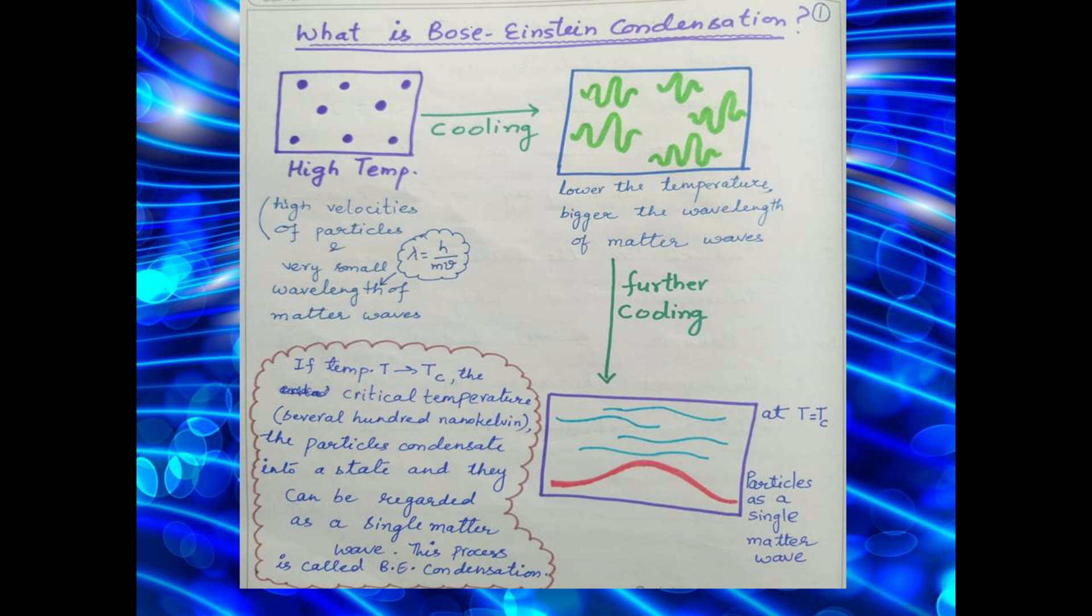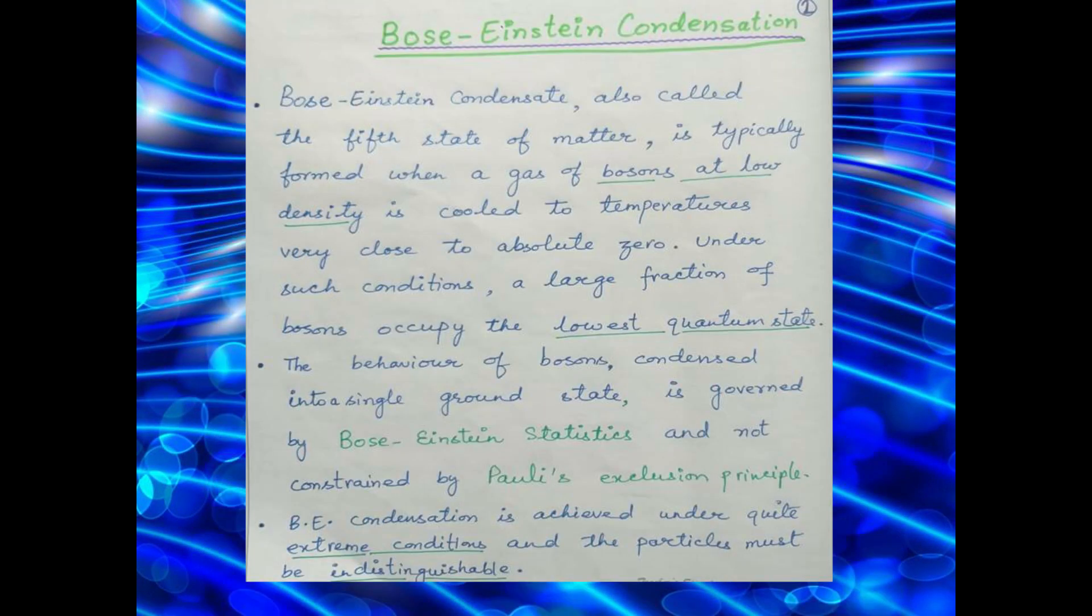This process is called Bose-Einstein condensation and it occurs at a very low temperature, several hundred nano Kelvin. Bose-Einstein condensate, also called the fifth state of matter, is typically formed when a gas of bosons at low density is cooled to temperatures very close to absolute zero.